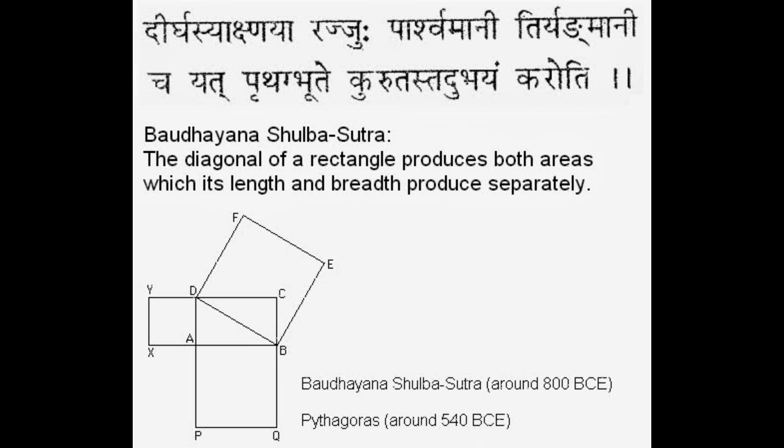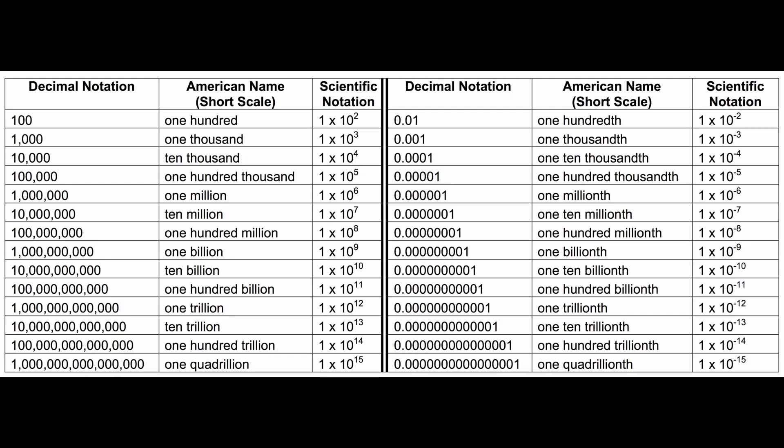In addition to the Bodhyana Sulva Sutra, there were two other Sulva Sutras. The next was composed by Manava, known as the Manava Sulva Sutra; Manava lived between 750 to 650 BC. The third and final Sulva Sutra is known as the Apastham Sulva Sutra, composed by Apastham, an ancient scholar who lived in the 6th century BC. The religious textbooks also provide evidence of the usage of very large numbers — for example, there is a prayer or mantra used during the Ashwameg Yag which uses numbers all the way from 100 to 10 to the power of 12.